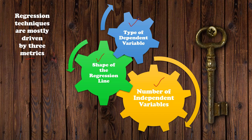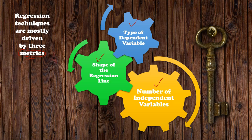The third criterion is the type of dependent variable. Based on the scale of measurement — nominal, ordinal, interval, or ratio — the regression type changes. If the dependent variable is nominal or ordinal, we adopt other kinds of regression. If it is interval/ratio or continuous, we use the standard regression analysis. Based on these three criteria, we must select the exact computation and formula for regression.